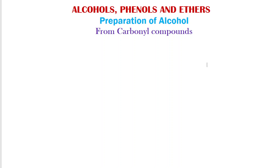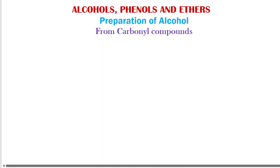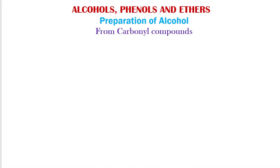Hello students, welcome to PSZ Chemistry Channel for easy learning. Today we are going to learn about the preparation of alcohol from carbonyl compounds. In the previous two videos, we dealt with the preparation of alcohol from alkenes by acid-catalyzed hydration as well as by hydroboration oxidation method. This is another method: from carbonyl compounds, which get reduced to form alcohol either by catalytic hydrogenation or by using a reducing agent. In this video we will deal with the reduction of aldehydes and ketones, as well as carboxylic acids and esters.